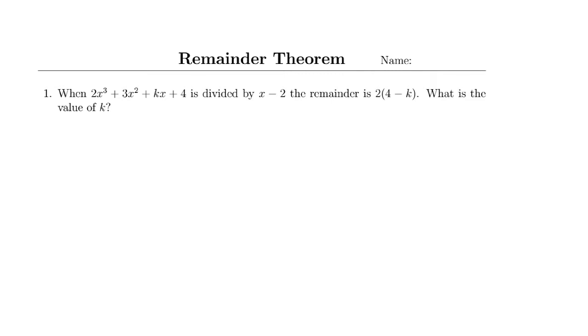The question is: when 2x³ + 3x² + kx + 4 is divided by x - 2, the remainder is 2(4 - k). What is the value of k?